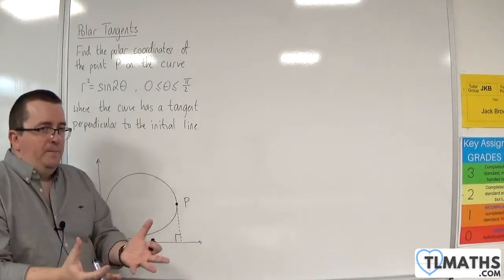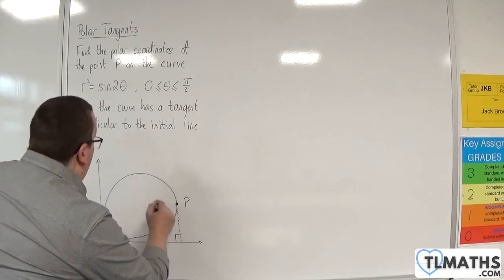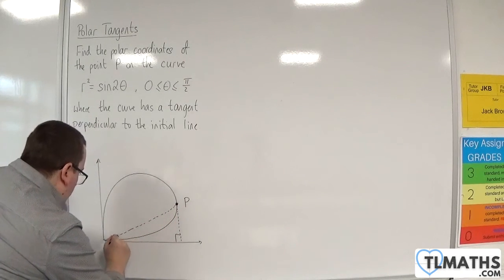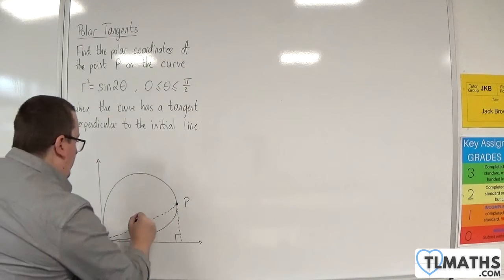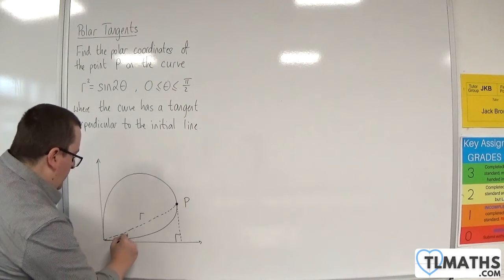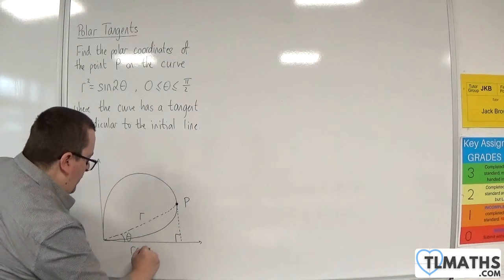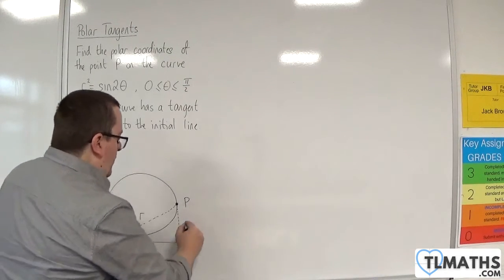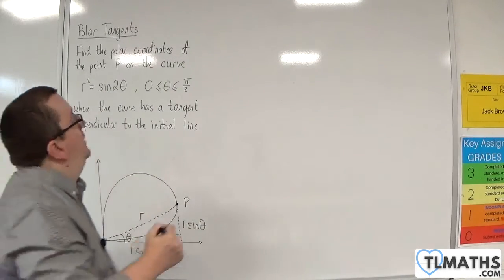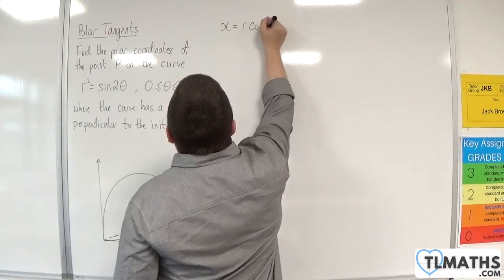So we can consider the Cartesian coordinates of P. Although we want to find the polar coordinates, we can use Cartesian coordinates — r is the distance from the origin and θ is the angle. So the x-coordinate is r cosθ and the y-coordinate is r sinθ. Therefore x = r cosθ.